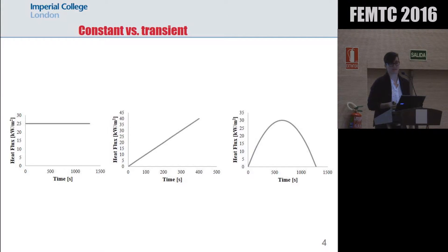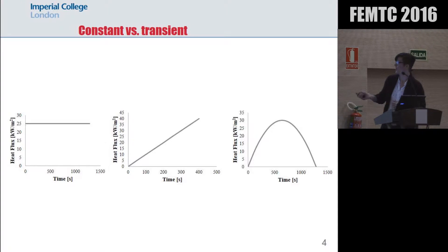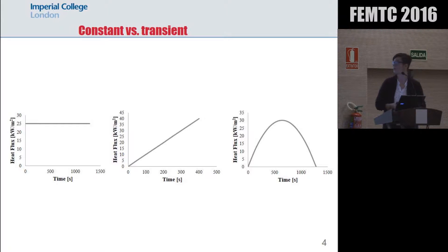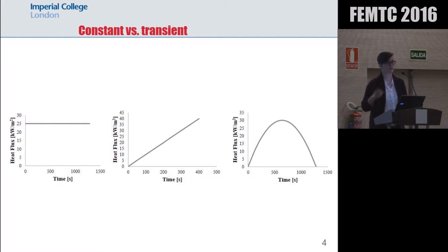It might not make any difference, but it might, so it's very important to actually see what happens. This constant irradiation scenario has been used in most experimental literature, and because it's been in most experimental work, it goes on to modeling as well, because modeling has to be validated through experiments. The second most used is the linear heat flux — there have been a couple of experiments in the literature that use a linear heat flux. And the one that we used is a parabolic curve, and we decided on it because it captures both the growth of the fire and the decay of the fire. There are obviously a lot more possibilities to try these transient scenarios, but this is what we chose for the purpose of my work.